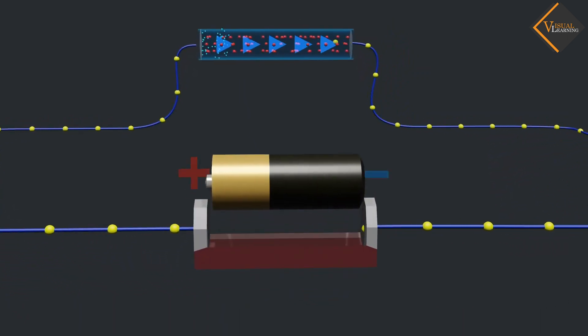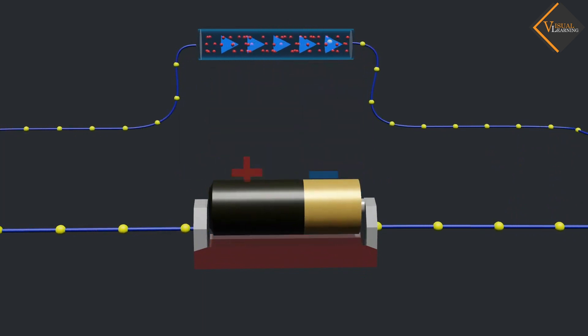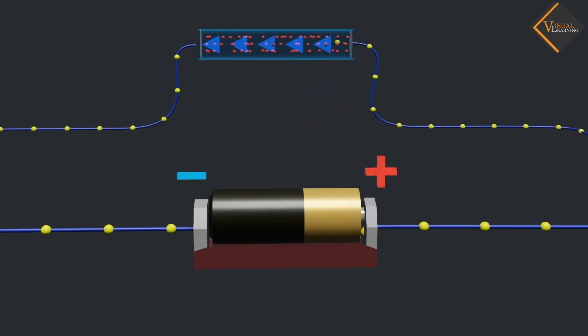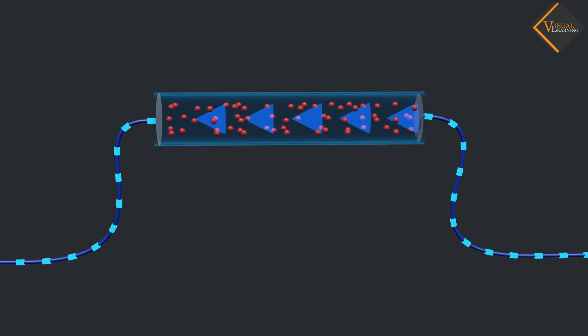Now, if we interchange the ends of the wire, we see that the direction of electron flow and current reverses. If we repeat this process, the direction of electrons and current keeps reversing.